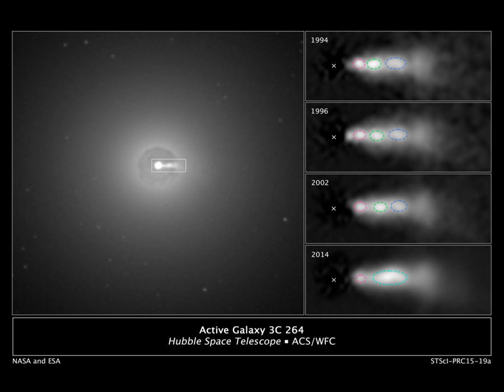Jet velocities when approaching the speed of light show significant effects of the special theory of relativity, for example relativistic beaming that changes the apparent beam brightness. Massive central black holes in galaxies have the most powerful jets, but their structure and behaviors are similar to those of smaller galactic neutron stars and black holes. These SMBH systems are often called microquasars and show a large range of velocities. SS433 jet, for example, has a velocity of 0.23 c.